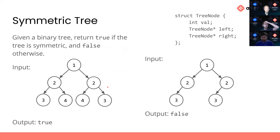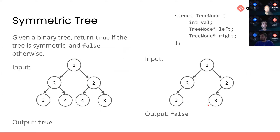Our first example problem is Symmetric Tree. Given a binary tree, we want to determine if it is symmetric — meaning it reads the same left-to-right as right-to-left. The first example shows a symmetric tree where we return true; the second is asymmetric and we return false. You can use this TreeNode definition. We'll give you five to seven minutes in breakout rooms to try to solve it, then come back and discuss.